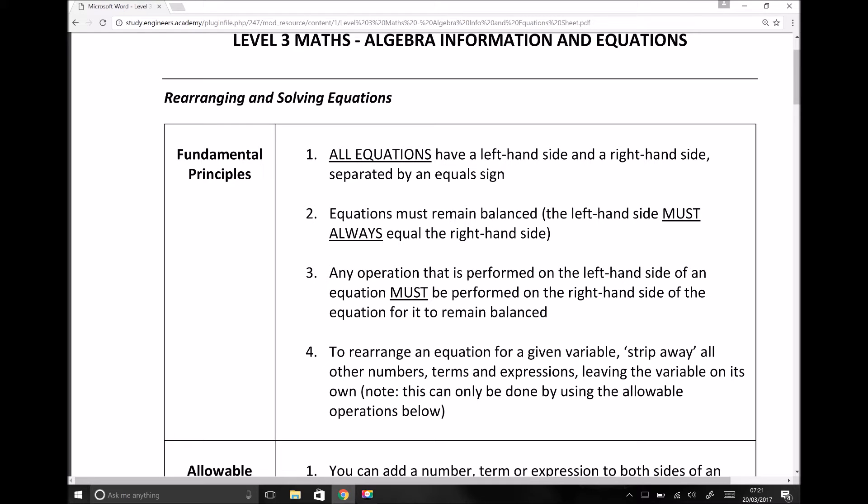The third principle is any operation that's performed on the left-hand side of the equation must be performed on the right-hand side of the equation for it to remain balanced. And I've just given the example there of adding and multiplying the contents in a scale on the left and right-hand side. So it's always useful to think back to this idea of an equation being like a set of scales that must remain balanced. We can't allow the scale to tip in one direction or the other by doing any operation to one side that we haven't also done to the other side.